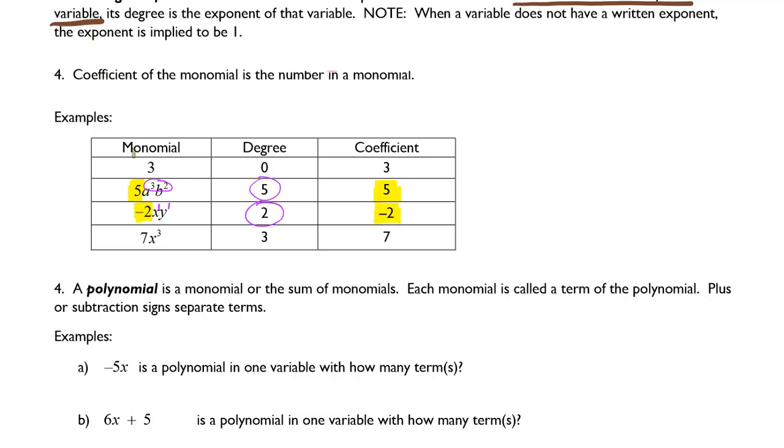Lastly, if we have 7x to the 3rd, the number in front is the coefficient, and the exponent is 3. So the degree is 3.